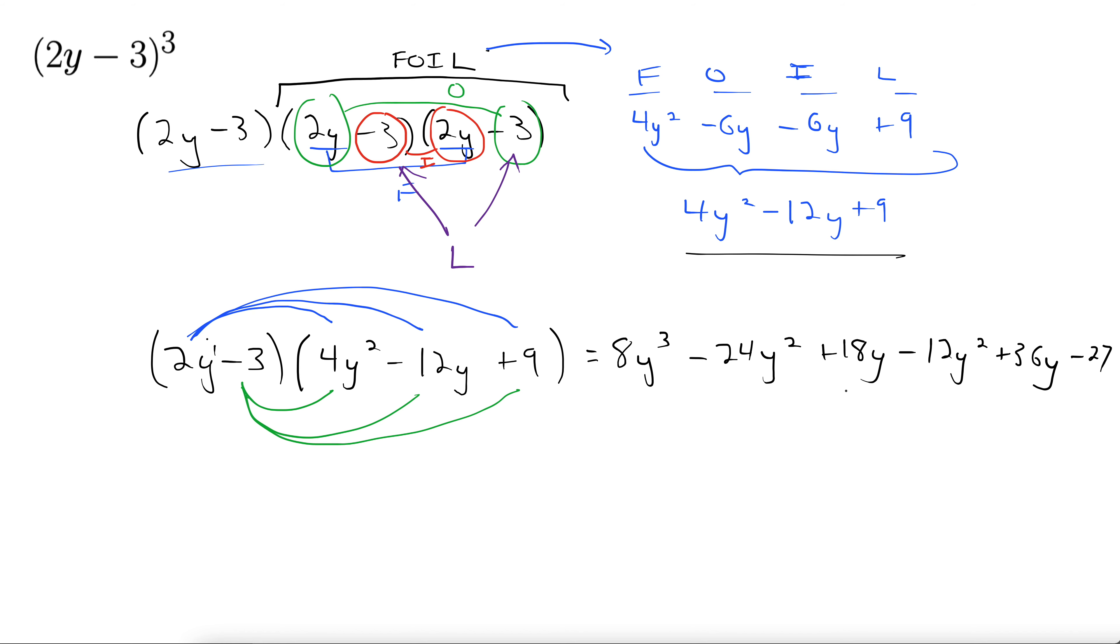These get kind of long. Running out of room here. Well, almost there. Combine like terms. Looks like those y squareds will go together. These y's go together. That leaves us with 8y cubed. Let's see, minus 24 minus 12 is minus 36y squared. 18 plus 36 is 54, plus 54y minus 27.